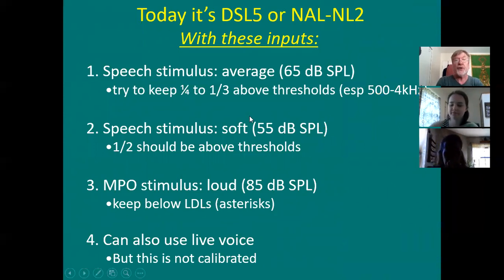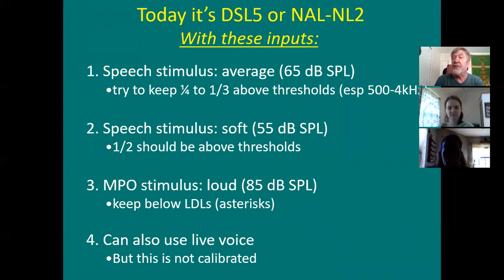Today it's DSL-5 or NAL-2, and your speech stimulus is usually 65 dB SPL — about 55 dB HL. What's an average MCL for someone with normal hearing? An average MCL — most comfortable loudness level in speech — if the person has perfectly normal hearing at 0 dB HL across the frequencies, an average MCL is about 50 to 60. An average UCL is about 100. His speech reception threshold is going to be 0, and his MCL is going to be around 50 to 60. What's the middle between 50 and 60? 55.